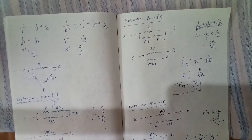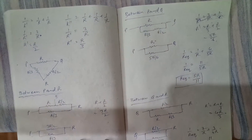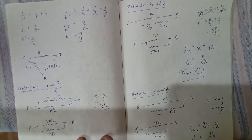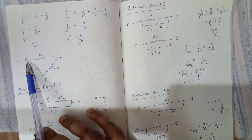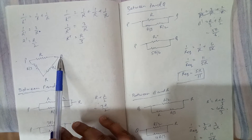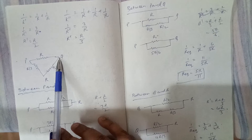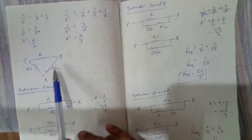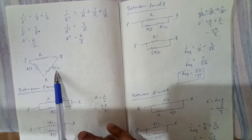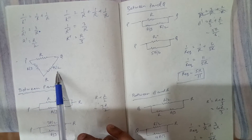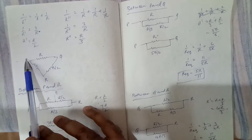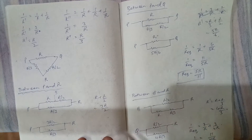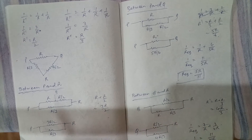The new reduced figure will be: between P to Q it is R, between Q to R it is R by two, and between P to R it is R by three.